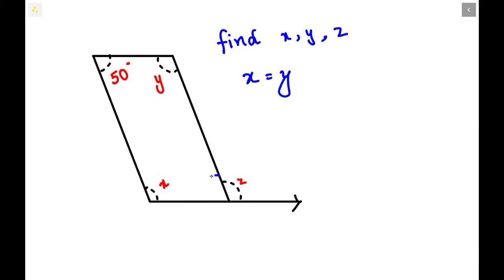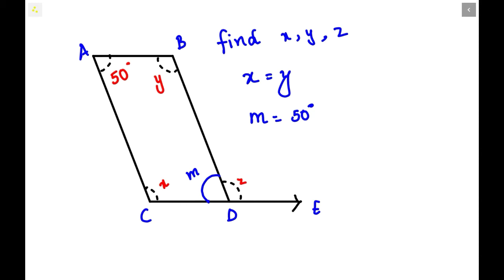Let me take this particular angle as M. So M will be equal to 50 degrees, meaning angle A is 50 degrees. And angle D will also be 50 degrees, since opposite angles are equal according to the parallelogram property. From the property, we can also confirm that X will be equal to Y. So we have got two hints to solve this problem.